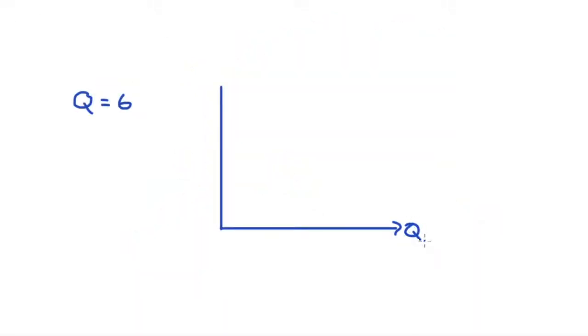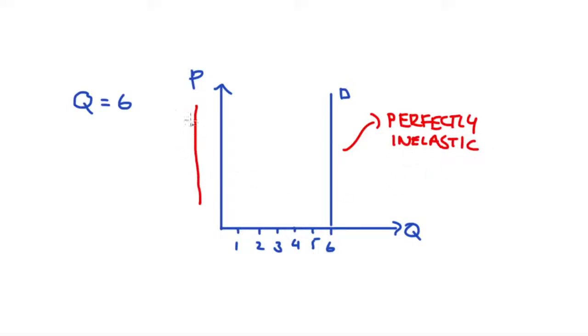In the last example, we have Q = 6, which can be represented as the opposite: as a vertical line upwards from the horizontal axis at 6. This line represents what economists would call perfectly inelastic demand, and we can interpret this line as communicating that regardless of the price, the amount demanded of the good in question will be 6.